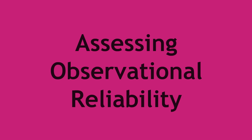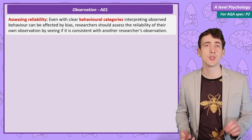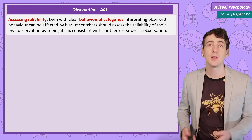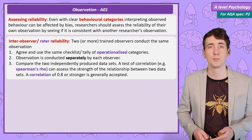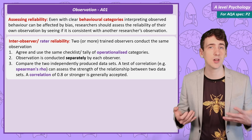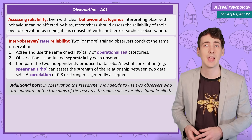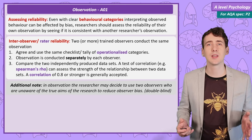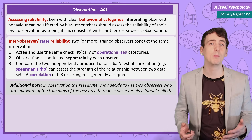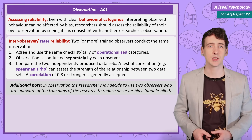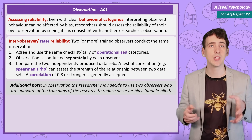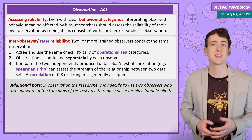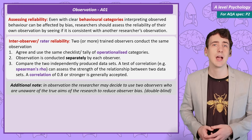Assessing Observational Reliability. After the data is collected, it is a good idea to assess its reliability. Researchers would conduct a test of inter-rater reliability. This simply involves using two researchers in the same observation — both given the same list of operationalised behavioural categories and conducting the observation separately. Afterwards, the researchers bring their data sets together to see if they are similar, using a correlation test such as Spearman's rho. Most researchers would accept a correlation of 0.8 or stronger as showing the results are reliable.